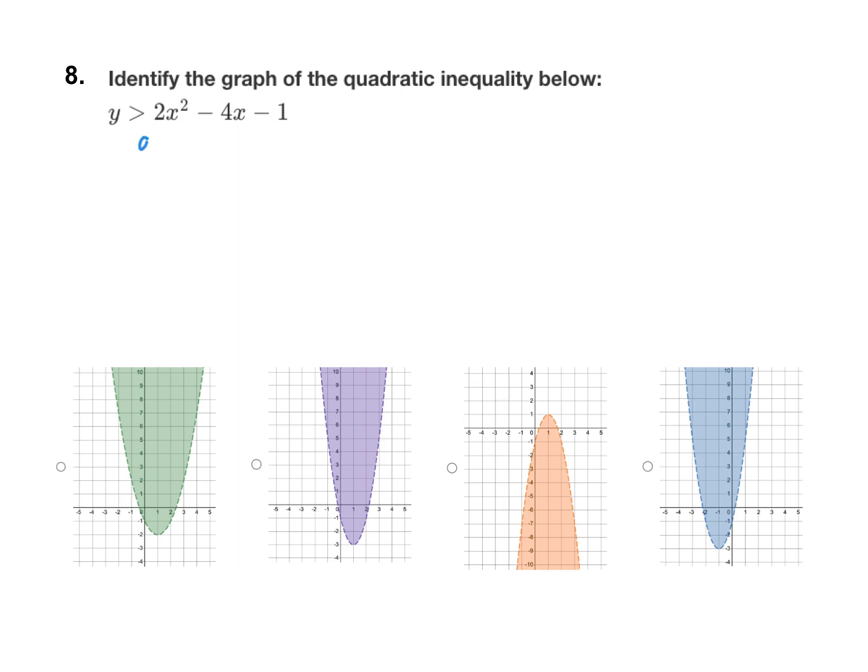So the first thing I'm going to do is label a, b, and c. a is positive 2, b is negative 4 since we have a minus 4x, and c is negative 1.